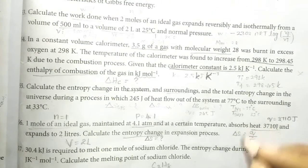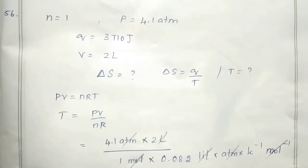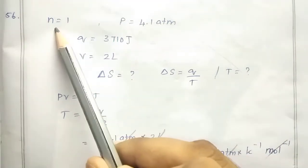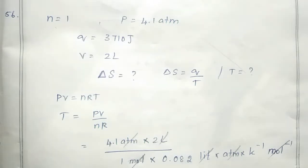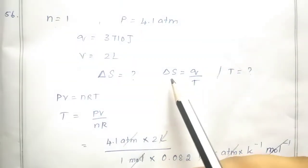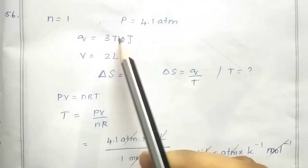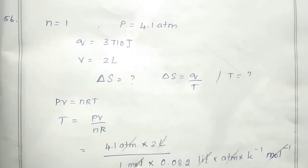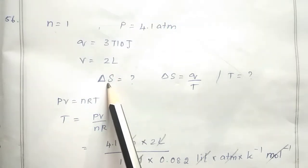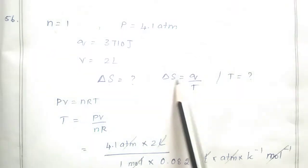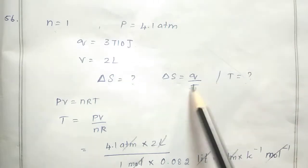We will solve for T using PV divided by nR from the ideal gas equation pV = nRT. We have the given values: number of moles n = 1, pressure P = 4.18 atm, volume V = 2 L, and Q = 3,710 J. We need delta S, which is entropy change. Since delta S = Q/T and we cannot get T directly, we will substitute T with PV/nR.